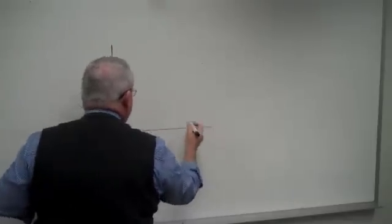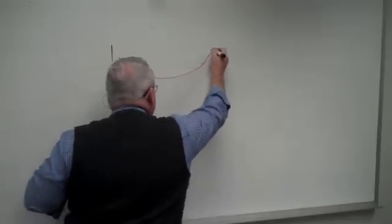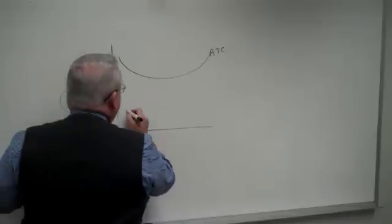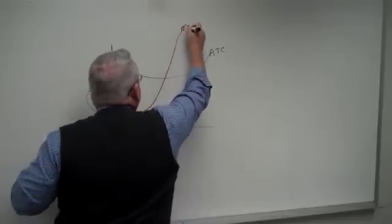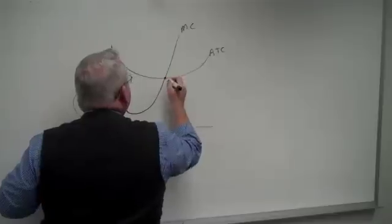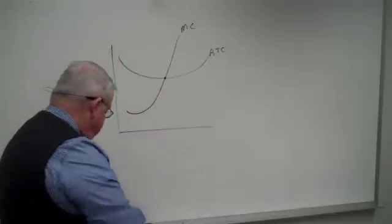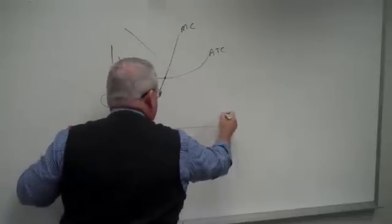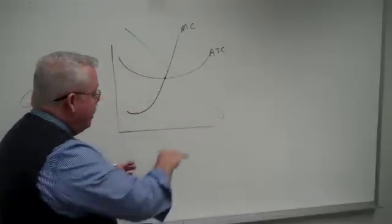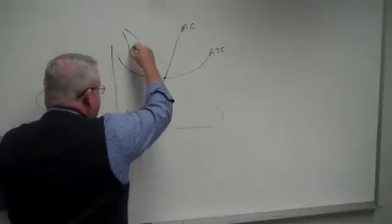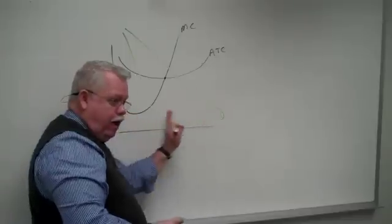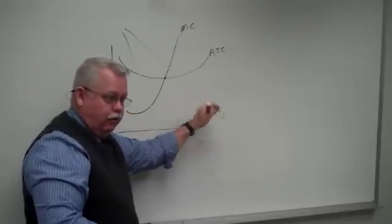So, monopolistic competition. Same graph we've looked at a million times with the same cost curves. I'm only going to do the average total cost curve, not the average variable cost curve. And we'll go ahead and put the marginal cost curve in there. The difference now is that the demand curve isn't perfectly elastic. It's got some slope to it. It's a negatively sloped demand curve.